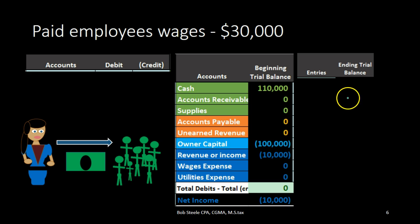First question: is cash affected? In this case it is, because we're paying cash — cash is being paid at this time. Is cash going up or down? For the employer it's going down because it's being paid out. Does cash have a debit or credit balance? It has a debit balance, as we can see on the trial balance — no brackets means debit balance. Therefore, to make something go down, we do the opposite. If it's a debit, the opposite is a credit. We're going to credit cash.